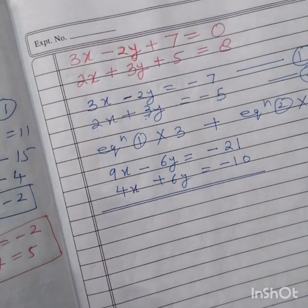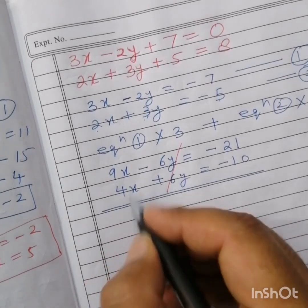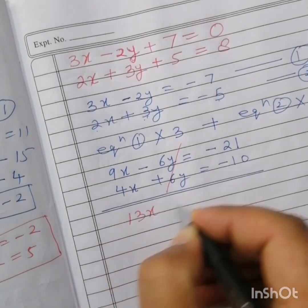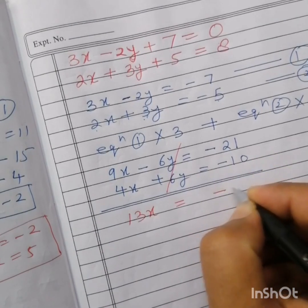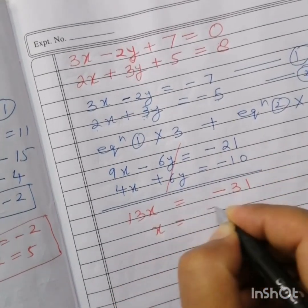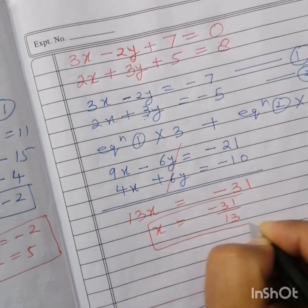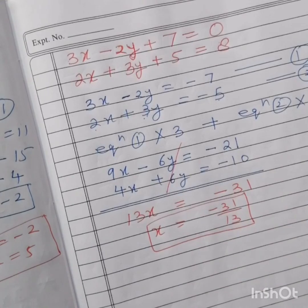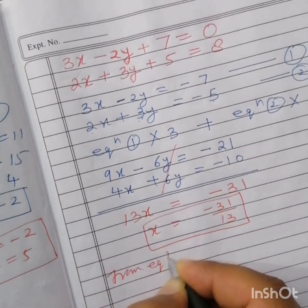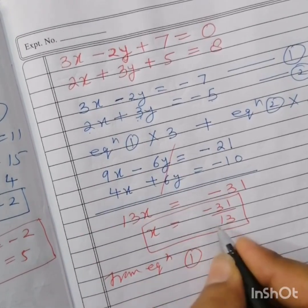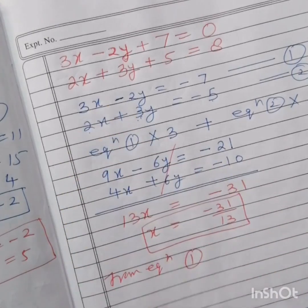The y coefficients are now equal in magnitude. Adding: 6y and minus 6y cancel. So 9x plus 4x equals 13x, and minus 21 plus minus 10 equals minus 31. Therefore x equals minus 31 divided by 13. Now from equation one, putting x equals minus 31 upon 13.